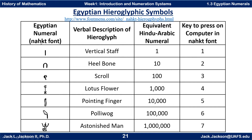In this slide, you can see the symbols in a particular font — a NAHKT font. I got this from a website and purchased it for about a dollar ninety-nine. In that font, I can get the vertical staff by just typing a one, type a two to get the heel bone, a three for the next symbol, and so forth. This font has many other hieroglyphics, but I'm just using it for the number ones. There's also a verbal description of each hieroglyph.